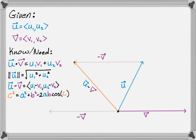I can pick up u minus v and move it as well — same direction, same magnitude, therefore same vector. So I have vector u, vector v, and to close off that triangle I have the vector u minus v. Those are all the things we need; we only need u, v, and u minus v, so we'll move to a new page.